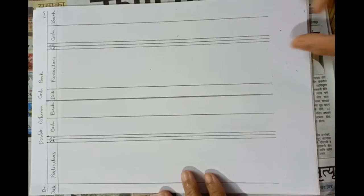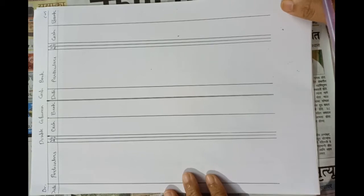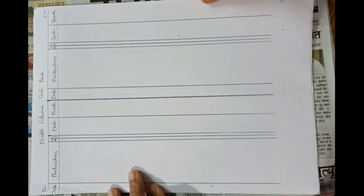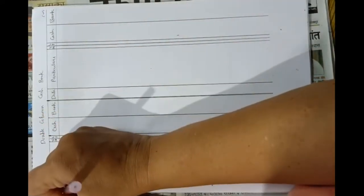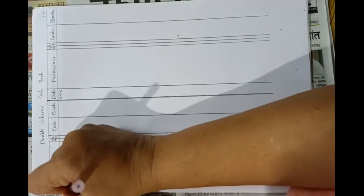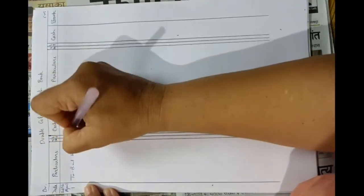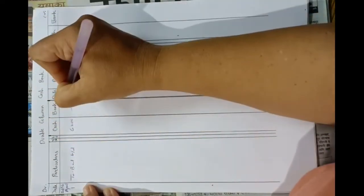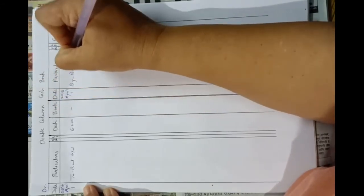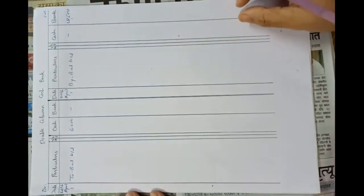Here in this problem, on April 1st, 2016, cash in hand is given Rs. 6,200 and bank overdraft — that is, negative balance of bank — is given Rs. 18,500. So on April 1st, balance brought down in the cash column is Rs. 6,200, and in the bank column Rs. 18,500 is shown as bank overdraft.